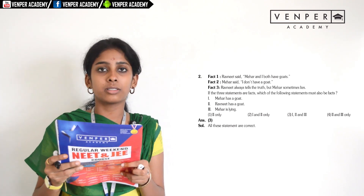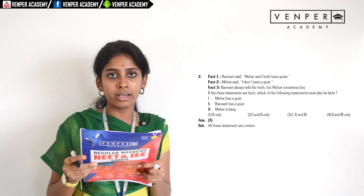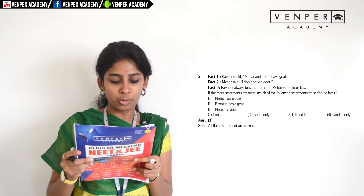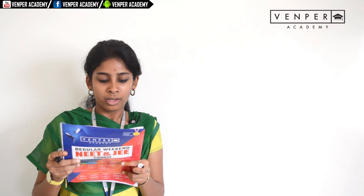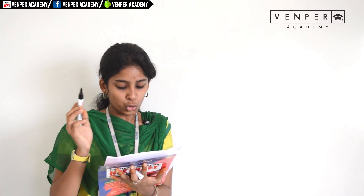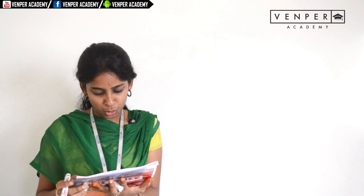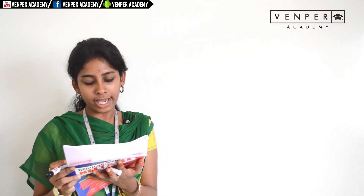Question two: they have given us three facts. Fact one — Ravneet said Meher and Hai both have goats. Fact two — Meher said I don't have a goat. Fact three — Ravneet always tells the truth but Meher sometimes lies. Since Ravneet only tells the truth, both of them have goats and Meher is lying. The question asks which statements must also be facts: Meher has a goat, Ravneet has a goat, and Meher is lying — all three are right. So option three.